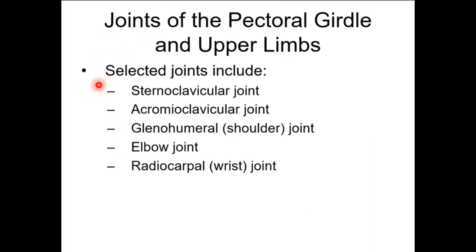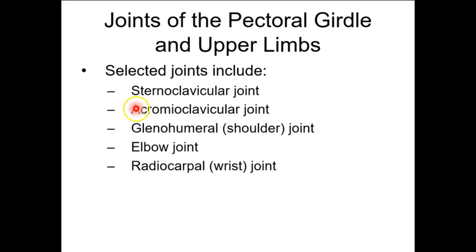Now, some joints of the pectoral girdle and upper limb — we'll do extra focus on the shoulder joint and hip joint later because those are the most frequently injured. Your sternoclavicular joint is between the sternum and the clavicle. You have something on your scapula known as the acromial process of the scapula, and then you have the clavicle, so the acromioclavicular joint is between that process of your scapula and your clavicle.